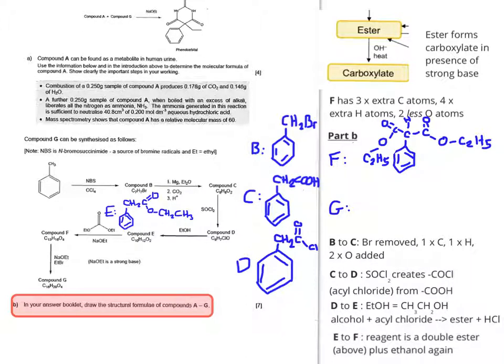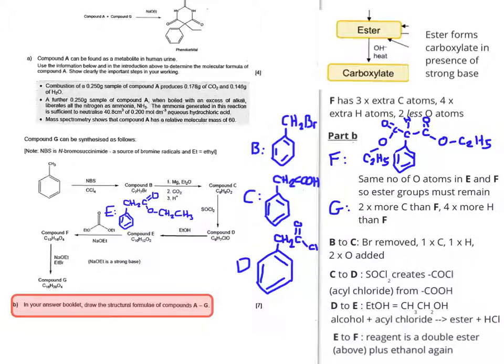We have to have something that is two more carbons than F and four more hydrogens than F. Sodium ethoxide NaOET could become NaOH. That means C2H5 replaces hydrogen. But we have the same number of oxygen atoms in E and F so the ester groups must stay where they are.